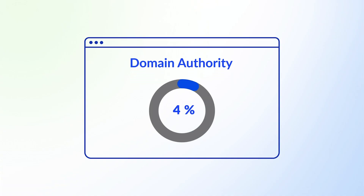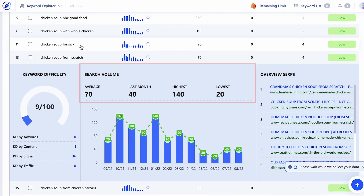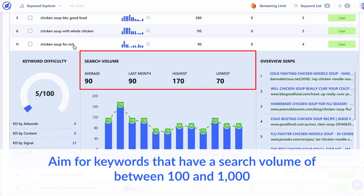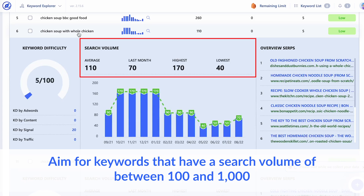Understanding this will help you decide whether to include keywords with low search volume in your campaign. Generally, if you're just starting out or your website doesn't have a lot of authority, a good rule of thumb is to aim for keywords that have a search volume of between a hundred and a thousand. This range ensures that there's decent traffic and that usually the competition is not too high, assuming that competitors are targeting higher search volume keywords.